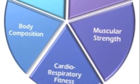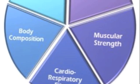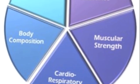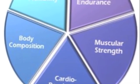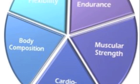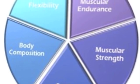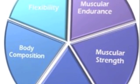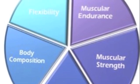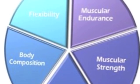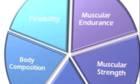Today we're going to learn about the five components of physical fitness. These five components are muscular strength, muscular endurance, cardiovascular endurance, flexibility, and body composition.